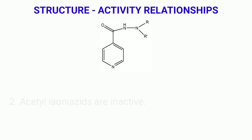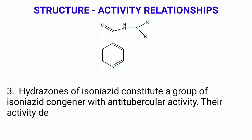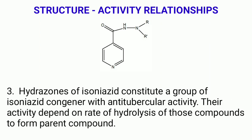The most important point regarding the Structure-Activity Relationship of Isoniazid is that Hydrazones of Isoniazid constitute a group of Isoniazid congeners with antitubercular activity.